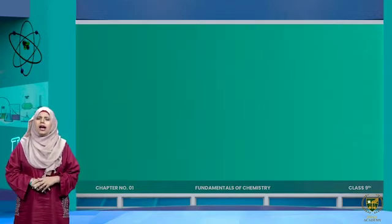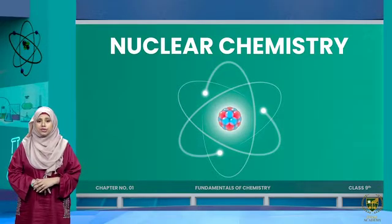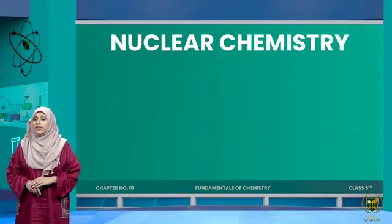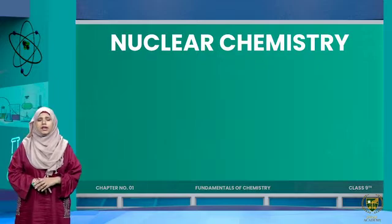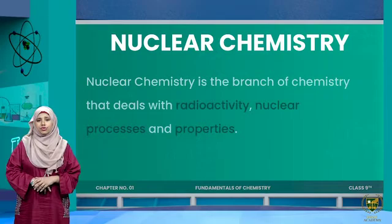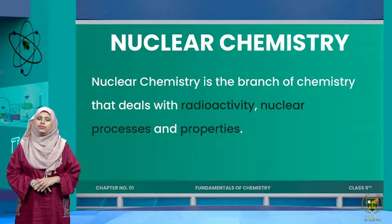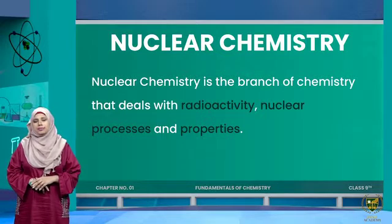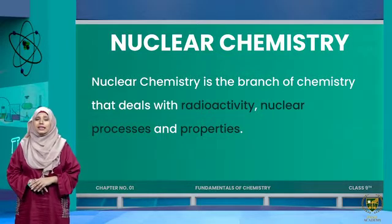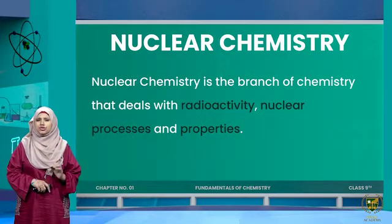Another branch of chemistry is nuclear chemistry. Nuclear chemistry is a very sensitive area — it is very dangerous for humans, animals, and plants as well. The definition of nuclear chemistry is: it is the branch of chemistry that deals with radioactivity, nuclear processes, and properties.